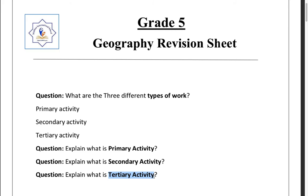The third type is tertiary activity. Tertiary activity is not materialistic — you deliver or sell something to people without giving them a physical object. For example, when you go to a doctor, he tells you what's wrong with your body and gives you a prescription with treatment, but he doesn't hand you anything to use directly — that's consultancy. Teachers give you knowledge; my job here is to give you knowledge, but you can't touch it. It's just a service. That's classified as tertiary activity.